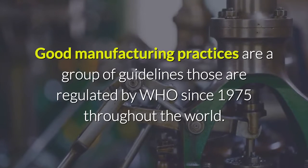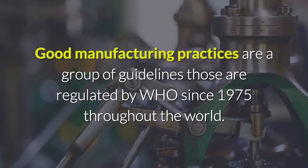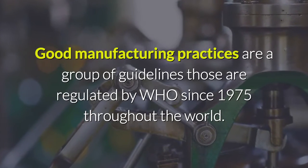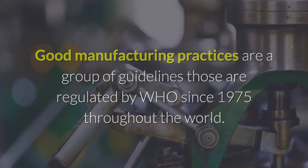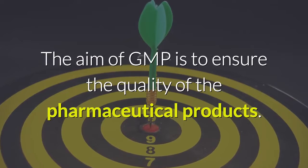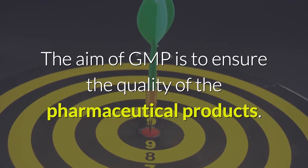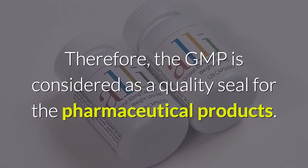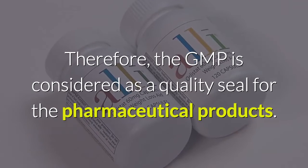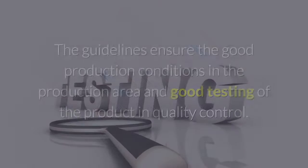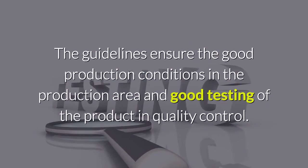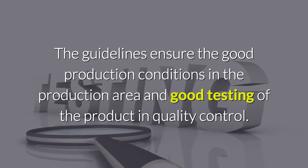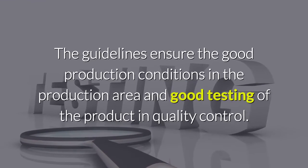Good manufacturing practices are a group of guidelines regulated by WHO since 1975 throughout the world. The aim of GMP is to ensure the quality of pharmaceutical products. Therefore, GMP is considered as a quality seal for pharmaceutical products. The guidelines ensure good production conditions in the production area and good testing of the product in quality control.